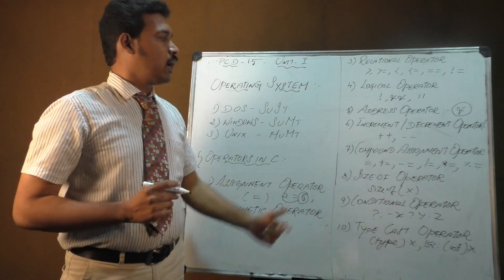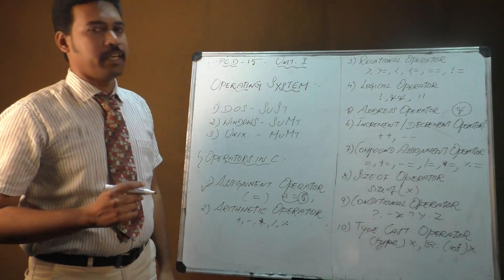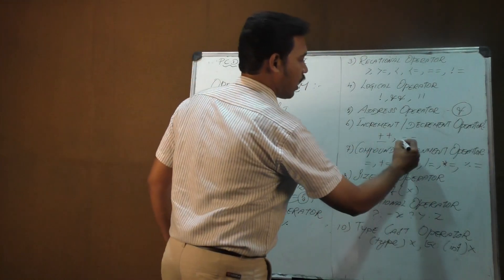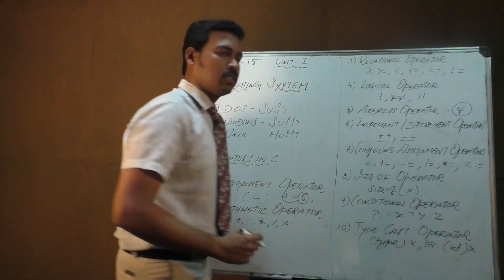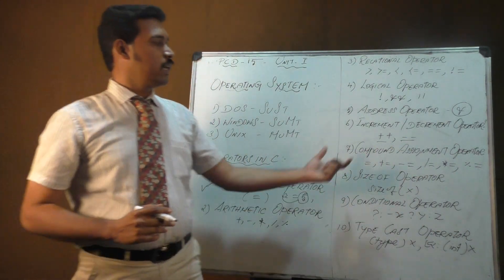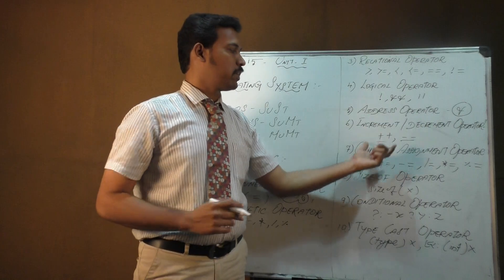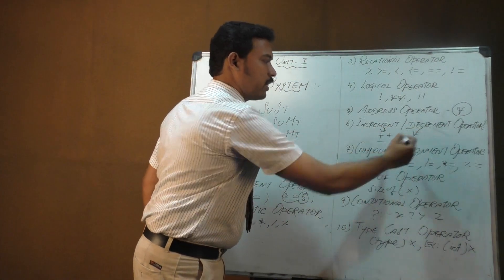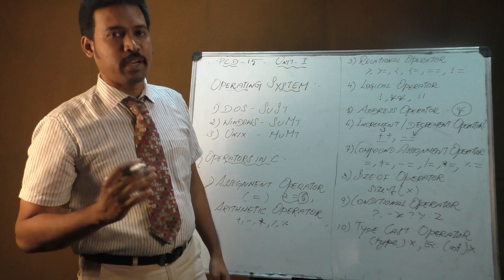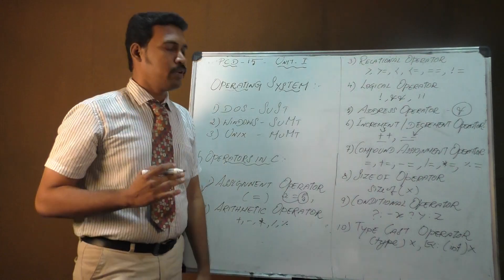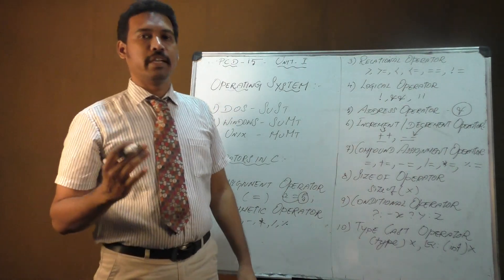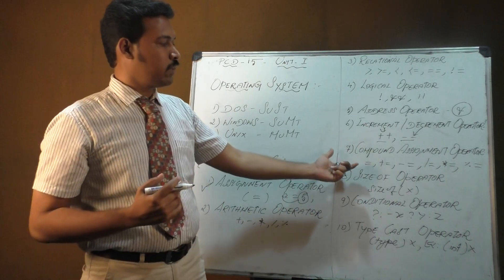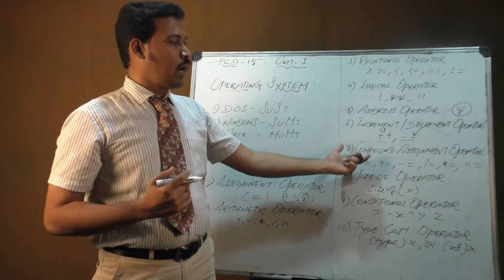The symbol used for the address operator is the ampersand symbol (&). The sixth operator is the increment or decrement operator: plus-plus (++) and minus-minus (--). The increment operator increases a value by one and the decrement operator decreases it by one.